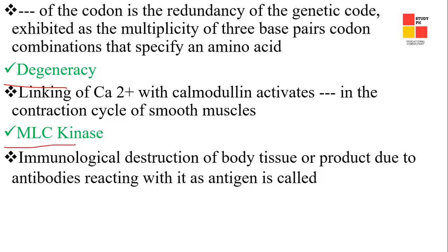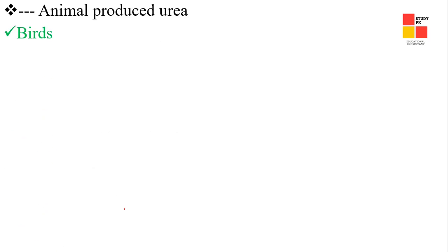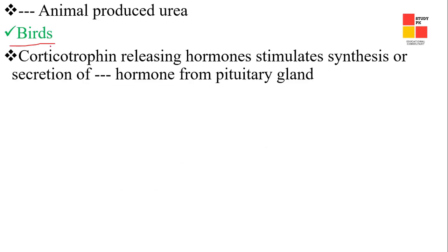Next one: immunological destruction of body tissue or products due to antibodies reacting with the antigen is called autoimmune disease. Next one: the animal that possesses a bursa of Fabricius — the right answer is a bird (bursa).